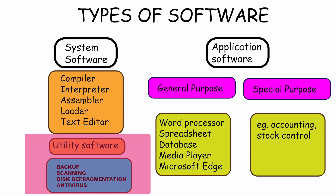Utility Software: System software is designed to help analyze, configure, optimize, or maintain a computer. Utility software is a system software that performs specific tasks related to managing a computer, its devices, or programs.